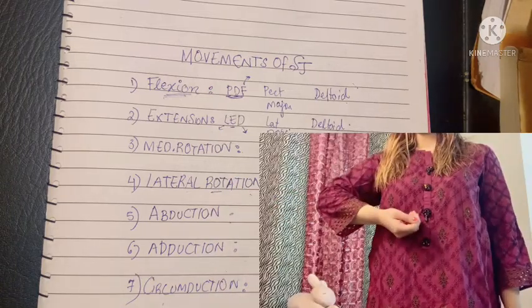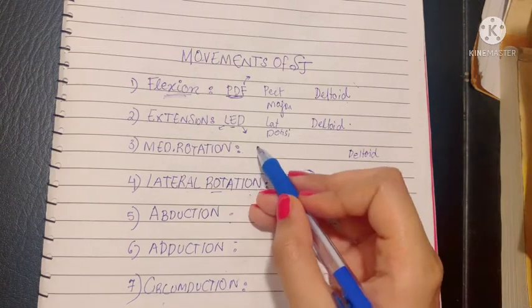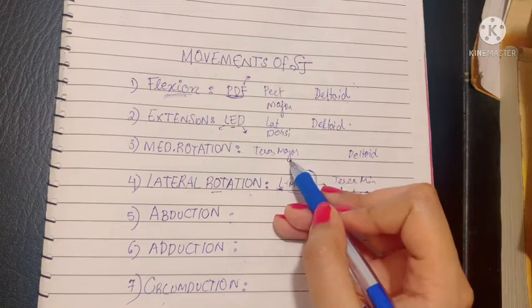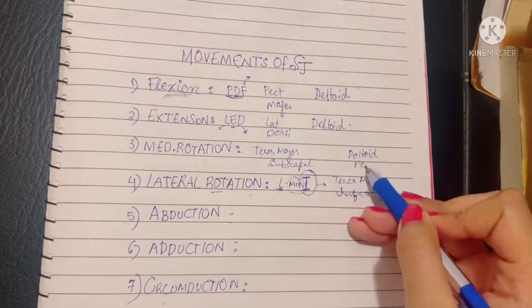Medial rotation: again, the deltoid takes part in medial rotation as well. Medial rotation is performed by the teres major and subscapularis muscles, along with the deltoid and pectoralis major muscles.